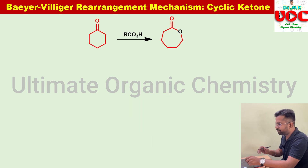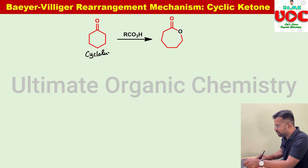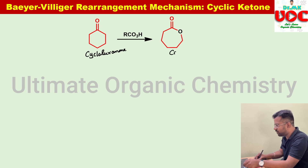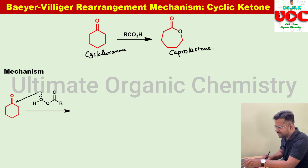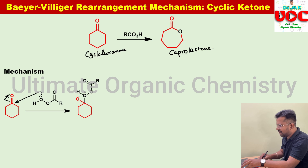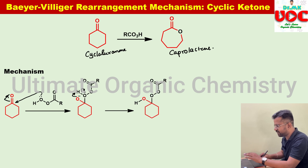Now let us discuss the cyclic ketone part. Cyclohexanone is taken as the reactant. When cyclohexanone is treated with peracid, it is converted into caprolactone. The mechanism will be the same: the lone pair of oxygen attacks the carbonyl carbon, the electron moves toward the oxygen atom, and the O⁻ takes the neighboring hydrogen atom. The electron then moves toward the oxygen atom, leading to the formation of the Criegee intermediate.